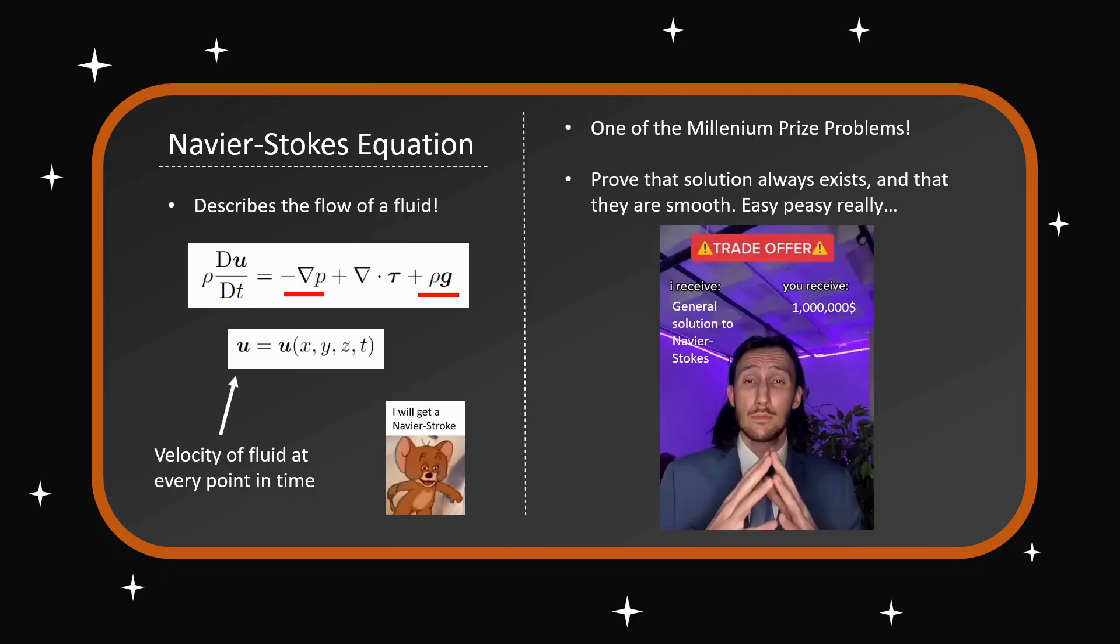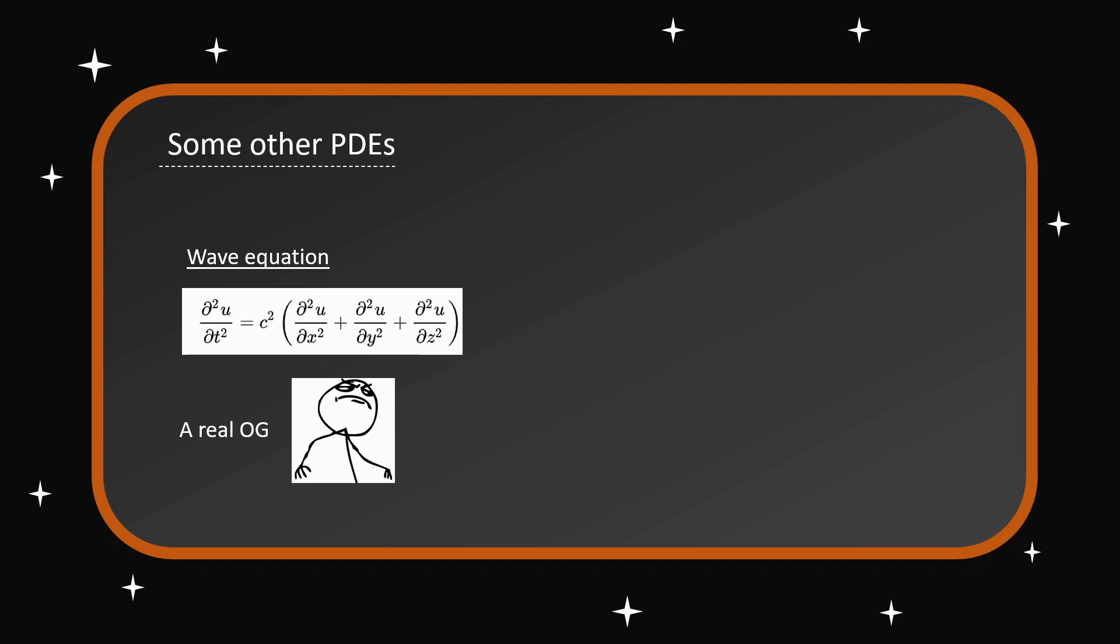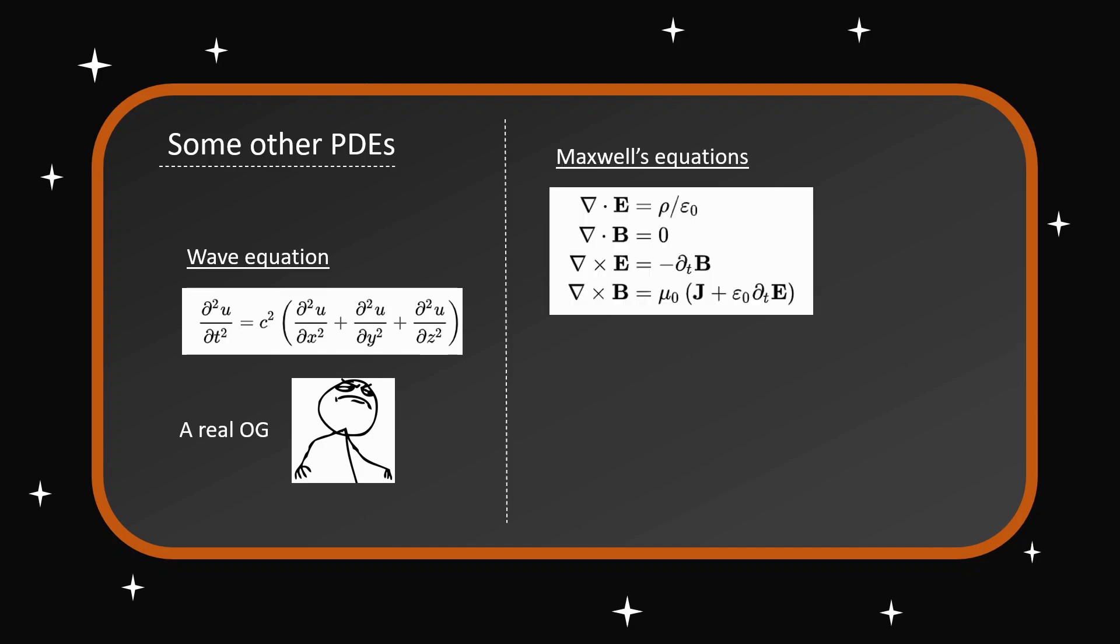This shows how hard PDEs are to solve—we use numerical methods when these are involved. Some other highlights of PDEs: the wave equation, a real OG. We also have a classic of course, Maxwell's equations, the E&M discourse. They describe how light flies through space, how the fields interact and permeate.